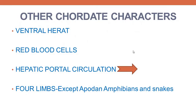Now let's discuss other chordate characters — characters not present in non-chordates. Heart is present in non-chordates too; in arthropods we discussed the presence of a dorsal tubular heart positioned dorsally inside the body. But in chordate organisms, the heart is present ventrally — that is one of the characteristics of chordates. Red blood cells are also present in chordate organisms. There are four limbs in chordates, except in apodan amphibians and snakes. There are no limbs in apodan amphibians — that means ichthyophis — and snakes also lack limbs.